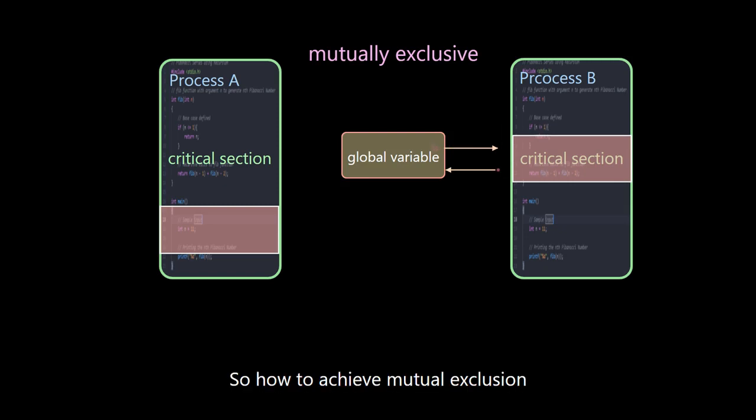So how to achieve mutual exclusion? Can we add a lock with a value? When the value is 1, it means that the resource has been locked, and process B has accessed.